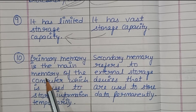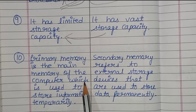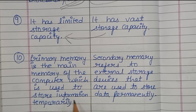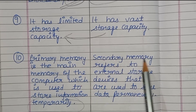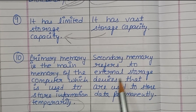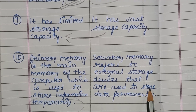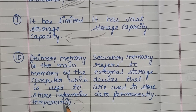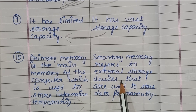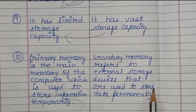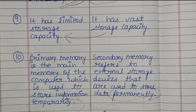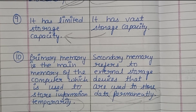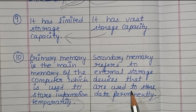Primary memory is the main memory of the computer which is used to store information temporarily. Secondary memory refers to external storage devices that are used to store data permanently. This is the difference between primary memory and secondary memory.